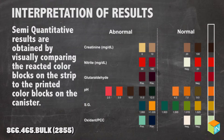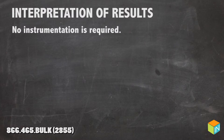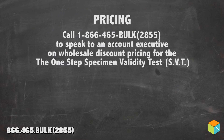Interpretation of results. Semi-quantitative results are obtained by visually comparing the reacted color blocks on the strip to the printed color blocks on the canister. No instrumentation is required. Call 1-866-465-BULK to speak to an account executive on wholesale discount pricing for the One Step Specimen Validity Test.